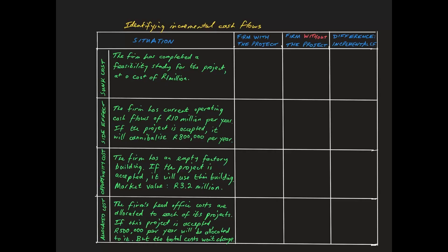Let's look at some examples. Here, there are four different situations: a sunk cost, a negative side effect, an opportunity cost, and an allocated cost. In each case, we will consider the cash flows of the whole firm in its two alternative future states, one with the project and one without the project. The relevant cash flow is identified as column A minus column B.